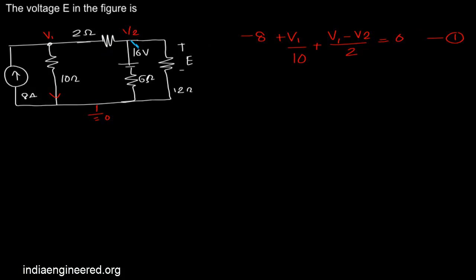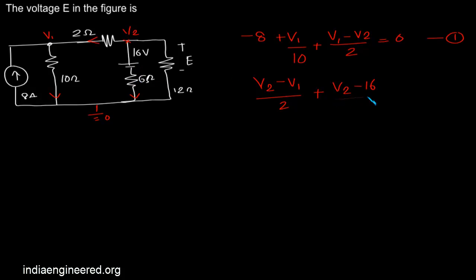Now we can write the KCL at node 2. The current through 2 ohms in this direction will be V2 minus V1 by 2, plus the current through 6 ohms — what is the potential difference? — V2 minus 16, divided by 6 ohms, plus the current through 12 ohms.